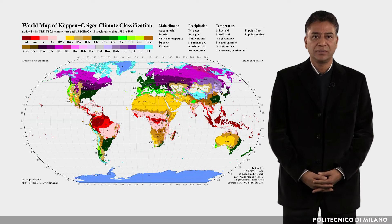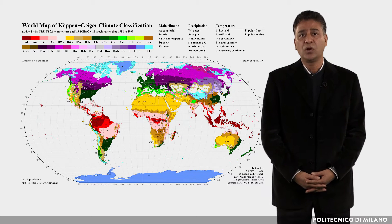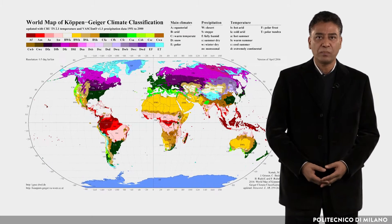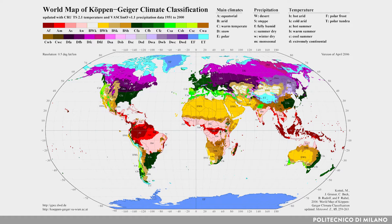The first comprehensive climatic classification system, as shown in the figure, was developed by Waldemir Köppen in 1884. It is based on the concept that native vegetation is the best expression of climate. Climatic zone boundaries were selected with vegetation distribution in mind.